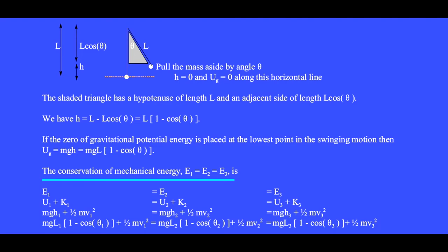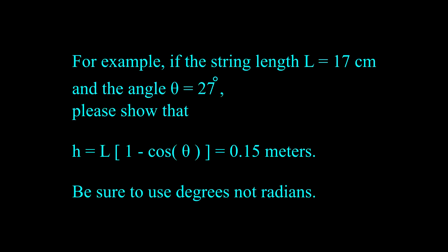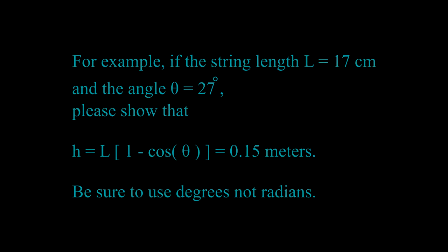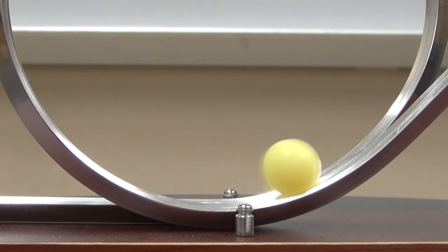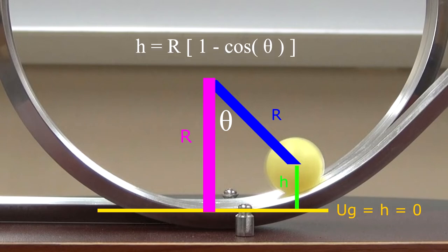If the zero of gravitational potential energy is placed at the lowest point in the swinging motion, then UG equals MGL times (1 minus cosine theta). The conservation of mechanical energy E1 equals E2 equals E3 can be written in terms of heights H1, H2, H3, or in terms of angles theta1, theta2, theta3 along with velocities V1, V2, V3. For example, if string length L equals 17 centimeters and angle theta equals 27 degrees, please show that H equals 0.15 meters — be sure to use degrees, not radians. This mass rolls in a circle of radius R, and we have H equals R times (1 minus cosine theta).